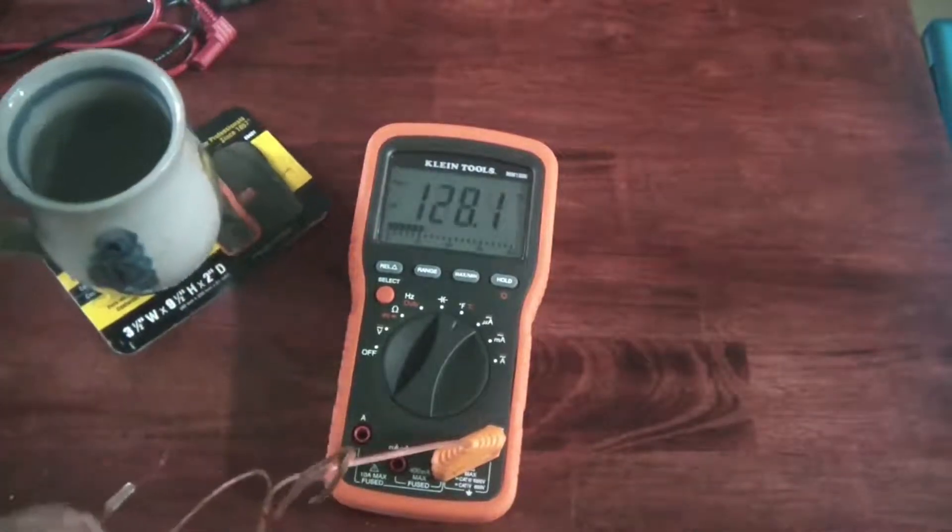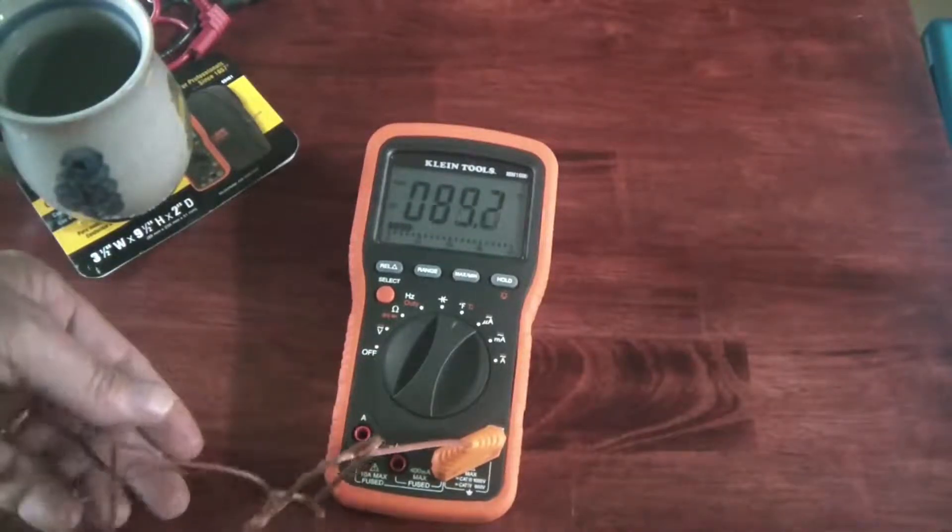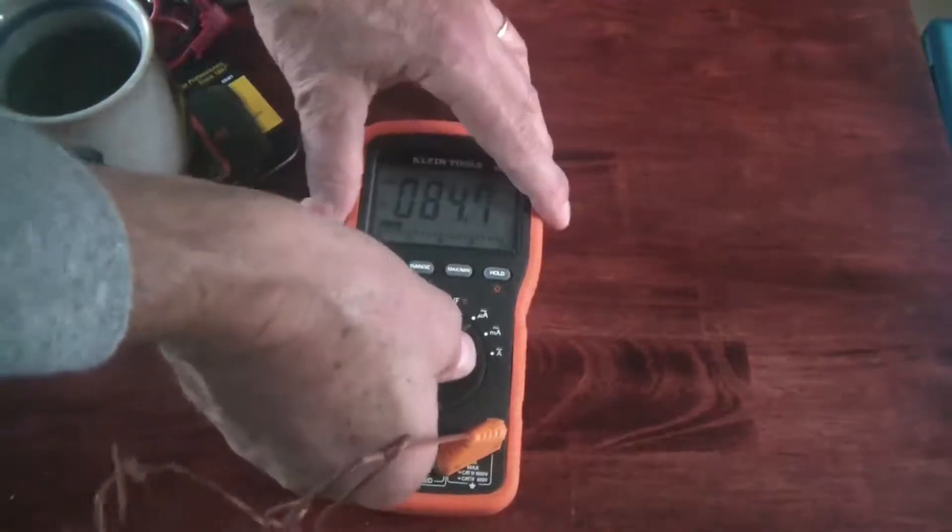So as far as I can tell, the thermocouple is measuring pretty accurate temperatures. So that's just a sample of a couple things you can use this digital multimeter with.